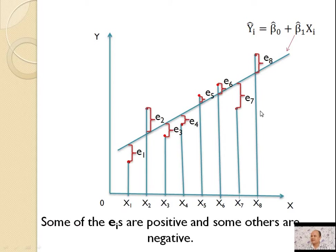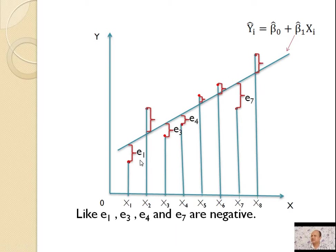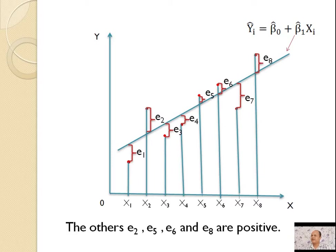Some of the eᵢ's, that is residuals, are positive and some others are negative. For example, e₁, e₃, e₄, and e₇ are negative, and e₂, e₅, e₆, and e₈ are positive.